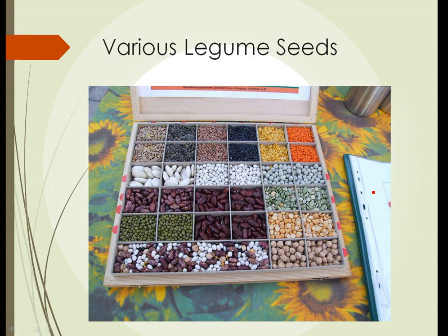Here we can see a collection of various legume seeds and you can see they come in a huge range of sizes and colors — from quite small to quite large, colors from white to purple, green, orange. However, if you look at the fruit that all of these came from, it would be a pod with a single row of seeds.